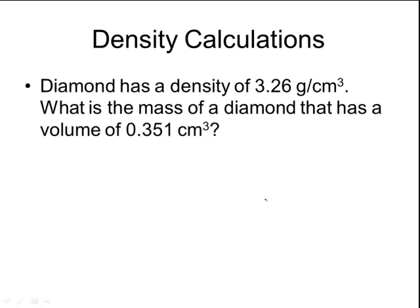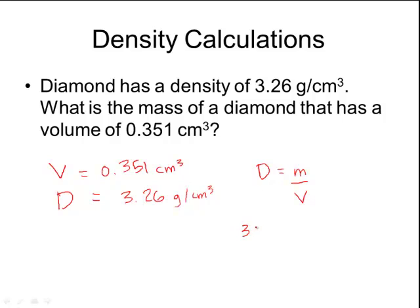Let's try another one. Diamond has a density of 3.26 grams per centimeter cubed. What is the mass of the diamond that has a volume of 0.351 centimeters cubed? Again, I'm going to write all that information down. The volume that was given, 0.351 centimeters cubed. The density that was given, 3.26 grams per centimeter cubed. Notice that I'm dealing with the density equation again. So I'm going to write down my density equation. Density equals mass divided by volume. And then I'm going to plug in the numbers that are over here into my equation on the right. So density is 3.26. Mass is what I'm trying to solve for, so I'm going to leave that in m. And my volume is 0.351.